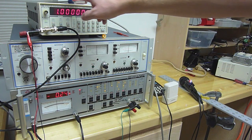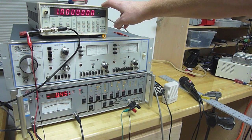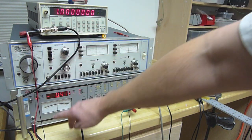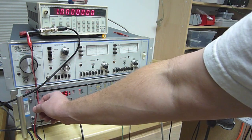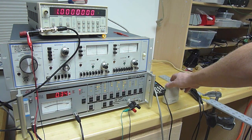So what we're doing is taking the output of the function generator, which is set to a kilohertz sine wave, and splitting that into two pieces. The first piece goes to the reference input of the lock-in amplifier, and the second piece goes to the speaker, so you can hear the one kilohertz, which is really irritating.